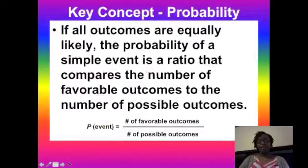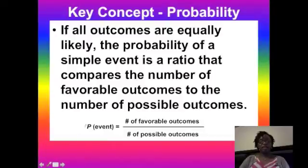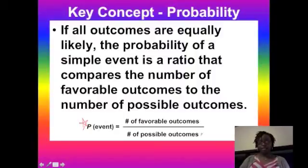Our key concept is probability. If all outcomes are equally likely — that's theoretical probability, meaning in theory what would happen with no variability — the probability of a simple event is a ratio that compares the number of favorable outcomes to the number of possible outcomes. Write down this formula: favorable outcomes over possible outcomes.